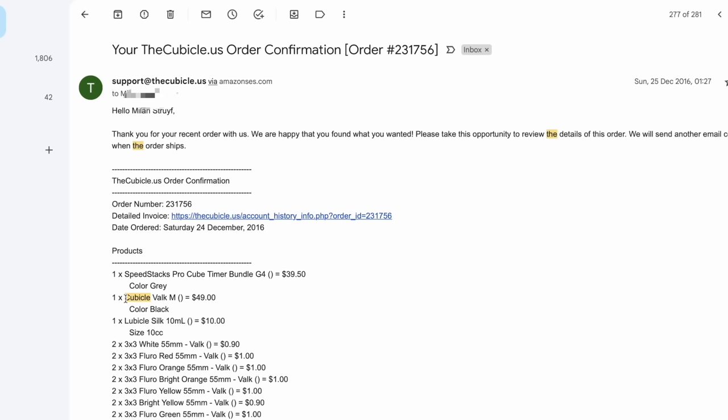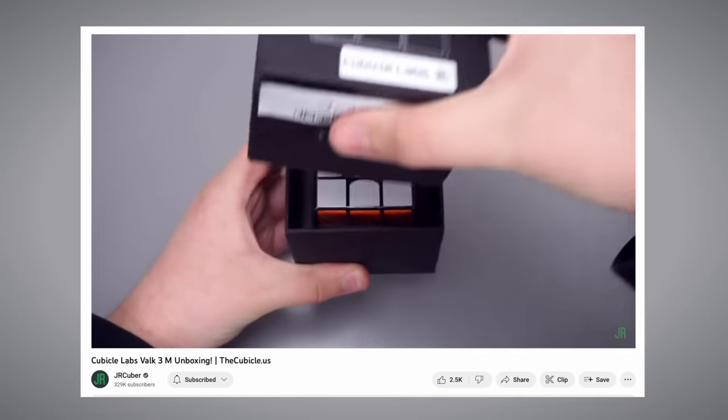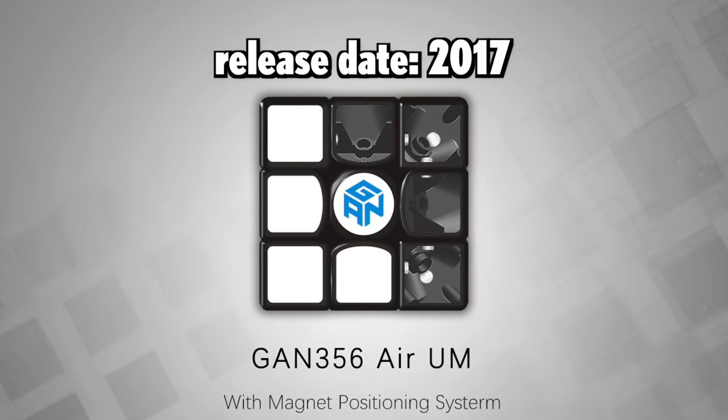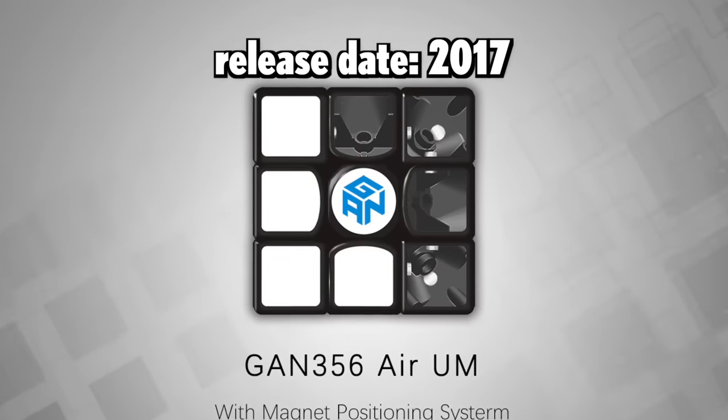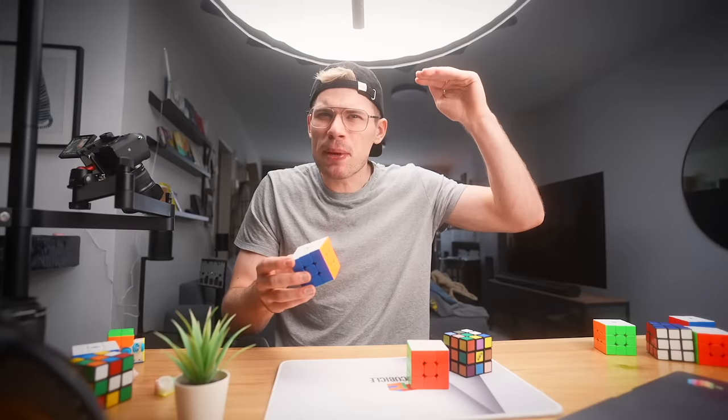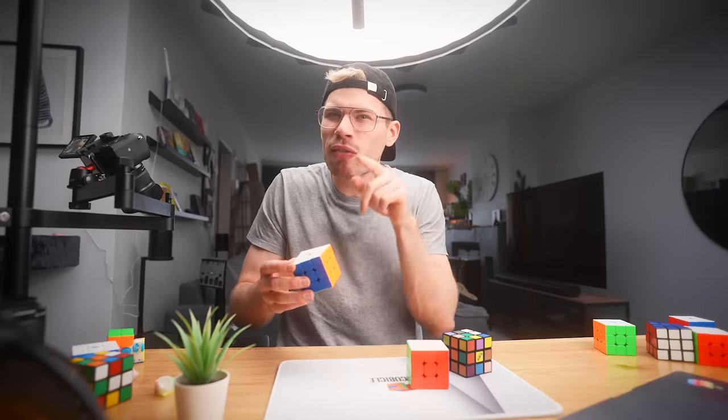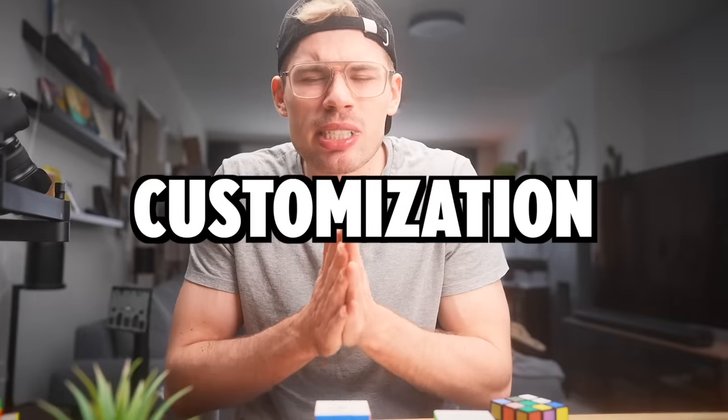But eventually, we didn't have to insert these magnets ourselves. I remember buying my first magnetic speedcube from the cubicle. It was a Valk 3 and they magnetized it themselves. But I think that the GAN UM was the first factory set magnetic cube. But when the performances of these cubes started to hit their peak, cube manufacturers had to set their focus on something else. And that's when they started focusing on customizations of the puzzle.